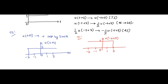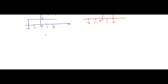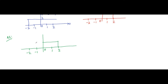Now amplitude scaling: the signal has to be scaled down by a factor of ½. We multiply the amplitude 1 by ½, so it becomes one-half. Nothing changes on the time axis — only the amplitude changes. This is 0, 1, 2, -1, -2 on the time axis, and the amplitude becomes 1/2 or 0.5. This is ½u(-t+2).